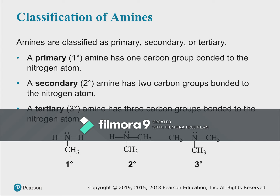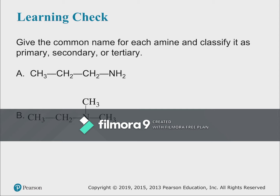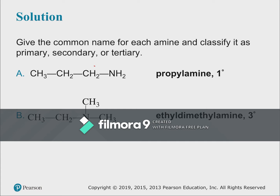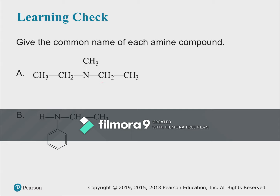We classify amines as primary, secondary, or tertiary based on how many carbon groups are attached to nitrogen. One carbon group (two H's) is primary; two carbon groups (one H) is secondary; three carbon groups (no H's) is tertiary. For practice: a nitrogen attached to one carbon group is primary; attached to three carbon groups is tertiary — for example, propylamine (primary) and ethyldimethylamine (tertiary).